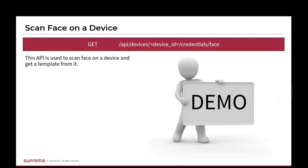The first step — scanning your face on a device — uses the following API. This API will scan the face on a device and retrieve a template from it. Instead of going over the details in text, I'll show you in Postman how it works. I'll also put a link to a detailed article at the end of this webinar that has all the information I'm explaining so you can look it up later.